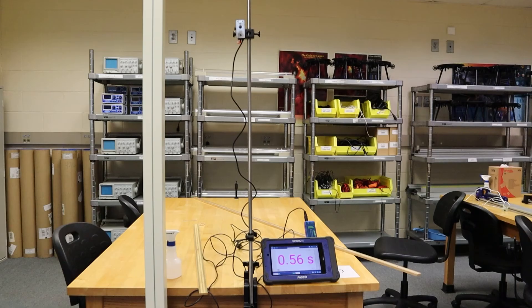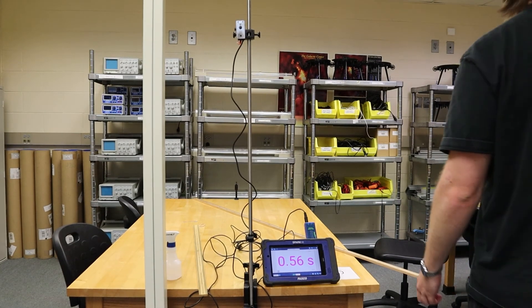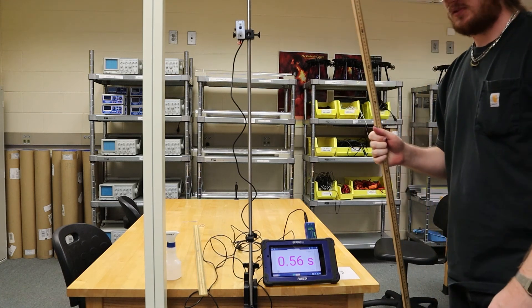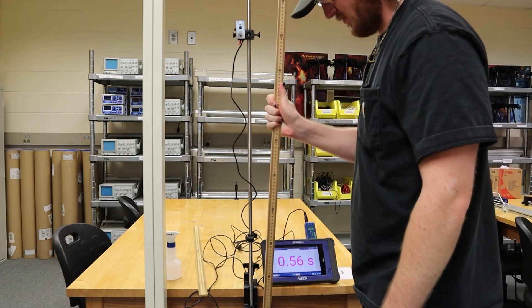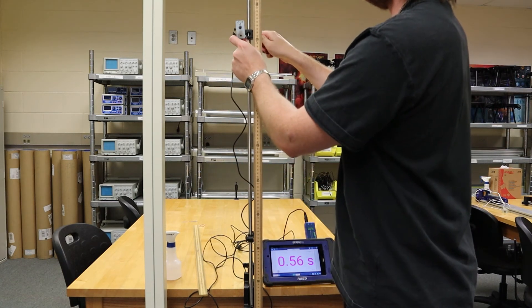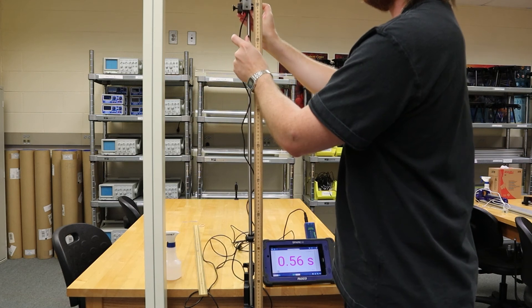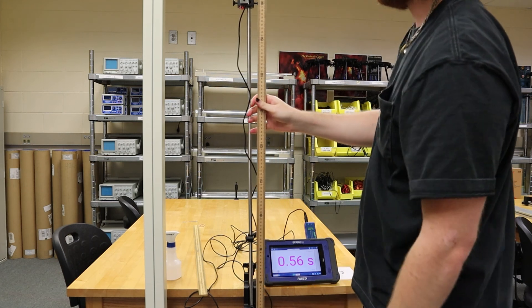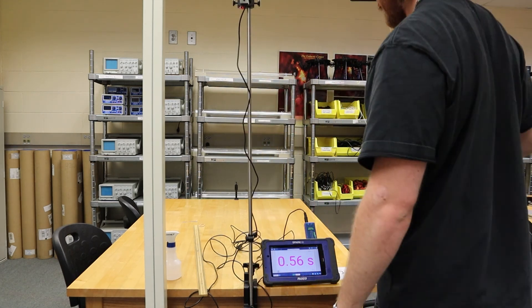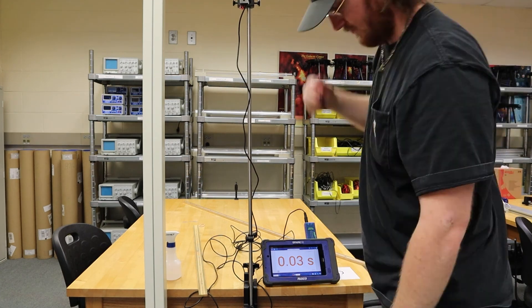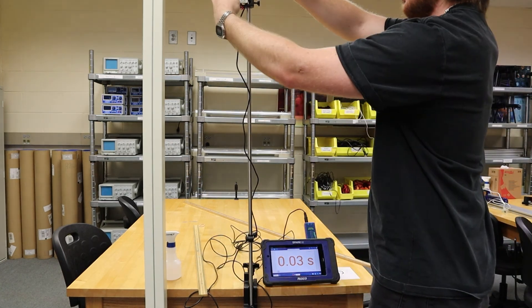Now we are ready to move on to Procedure B. For Procedure B, we will be adjusting the height of the ball holder. Again, loosen the set screw on the mounting hardware and adjust the height. Vary the height by at least 10 centimeters each time. The procedure for dropping the ball and collecting data is the same as Procedure A.